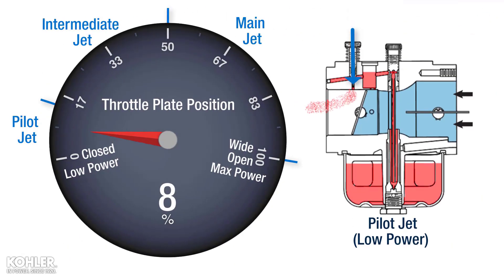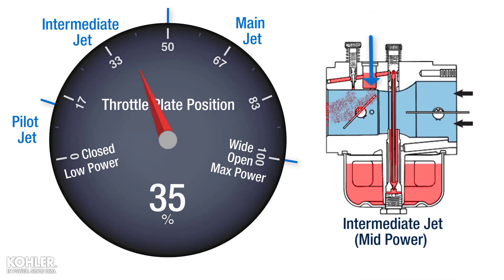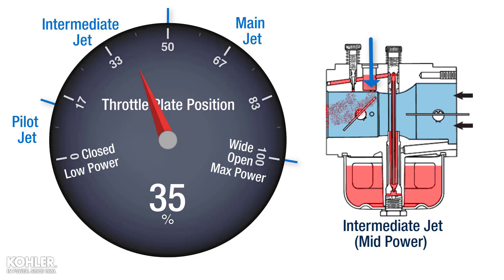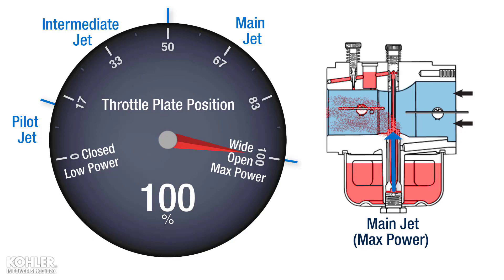The pilot jet circuit provides the least amount of fuel, therefore producing the least amount of engine power. The intermediate jet circuit combined with the pilot jet increases the amount of fuel, therefore increasing power output. The main jet circuit combined with the pilot and intermediate jets provides the most fuel, therefore allowing the engine to create maximum power output.